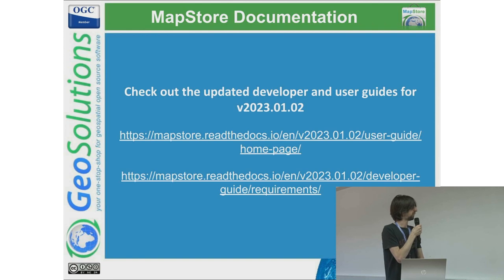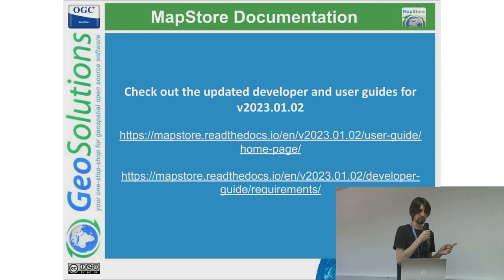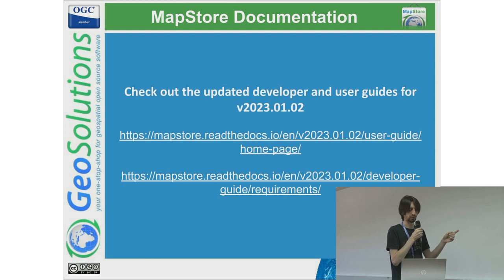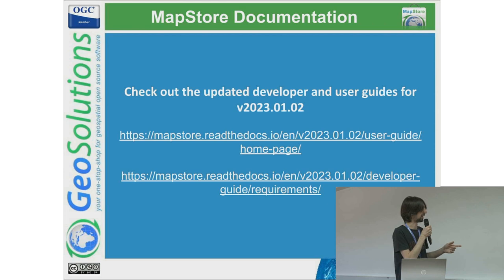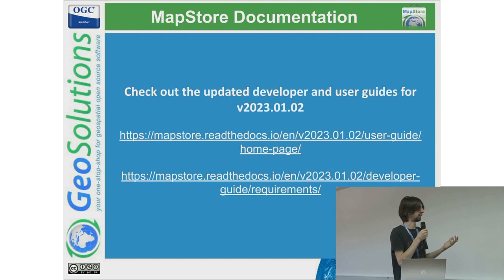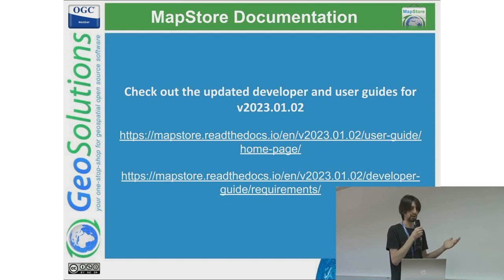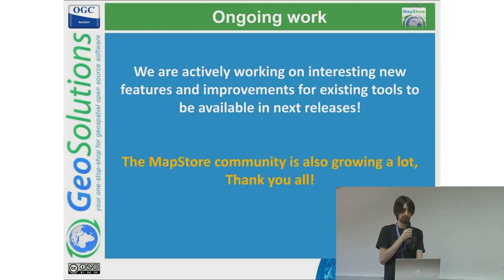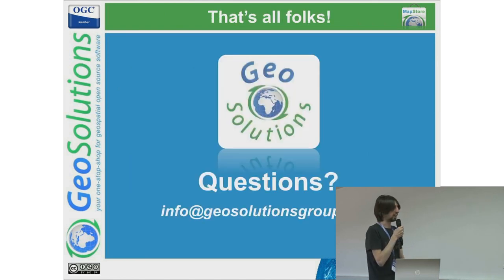To conclude this presentation, here are the links to the documentation. The first is related to the user guide of the latest release, and the second to the development guide for the latest release. If you want to take a look at MapStore and what the city of Genova is using — which is most, if not all, of the available functionality — you can check there. Thank you, and if there are any questions.